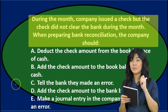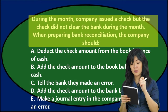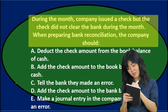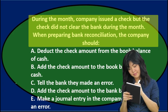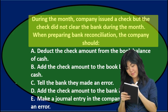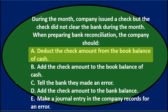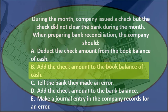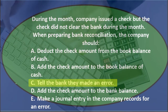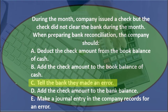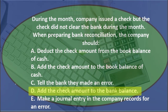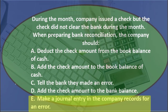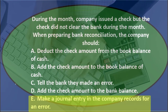Next question. During the month, a company issued a check, but the check did not clear the bank during the month. When preparing the bank reconciliation, the company should... A. Deduct the check amount from the book balance of cash. B. Add the check amount to the book balance of cash. C. Tell the bank they made an error. D. Add the check amount to the bank balance. Or E. Make a journal entry in the company records for an error.